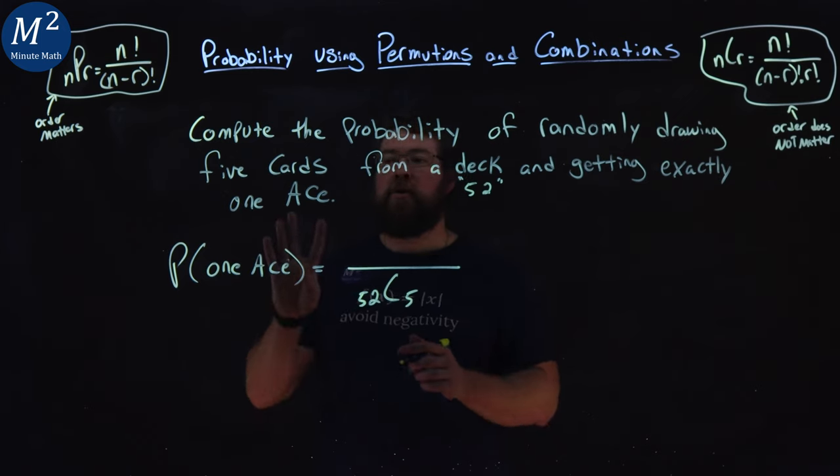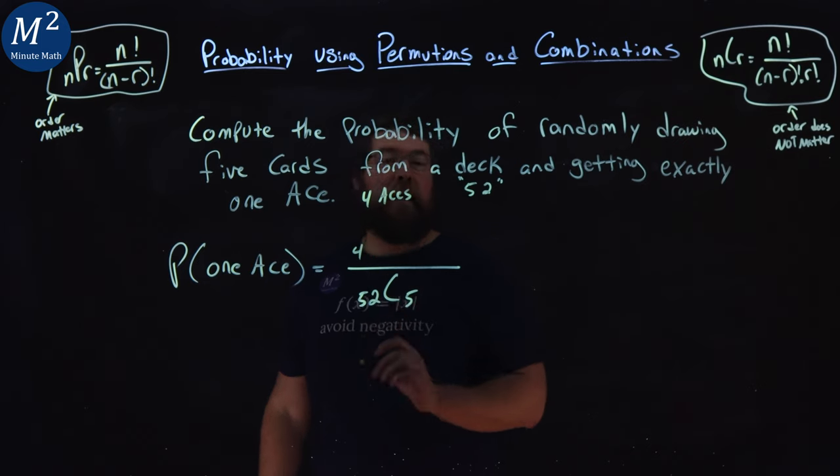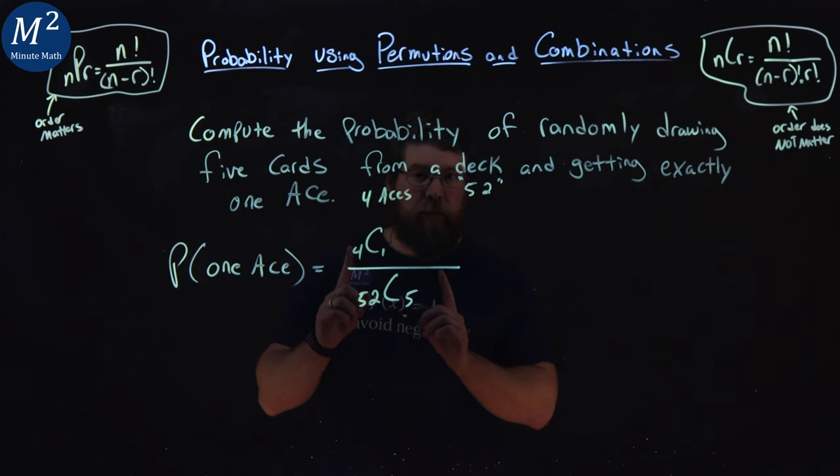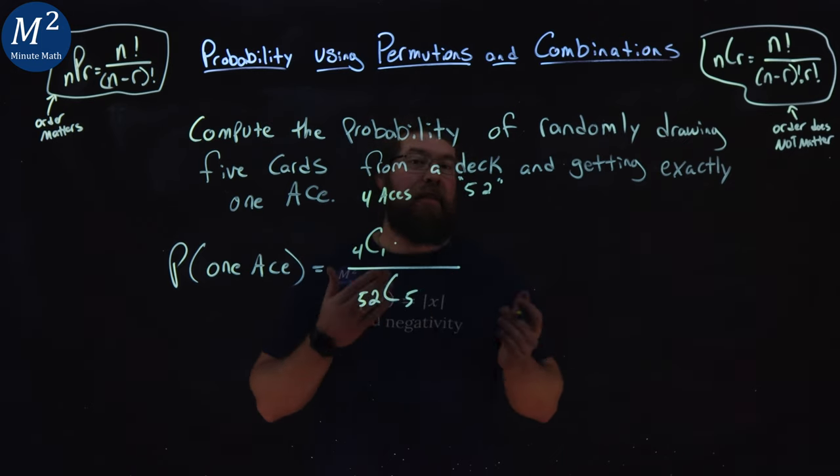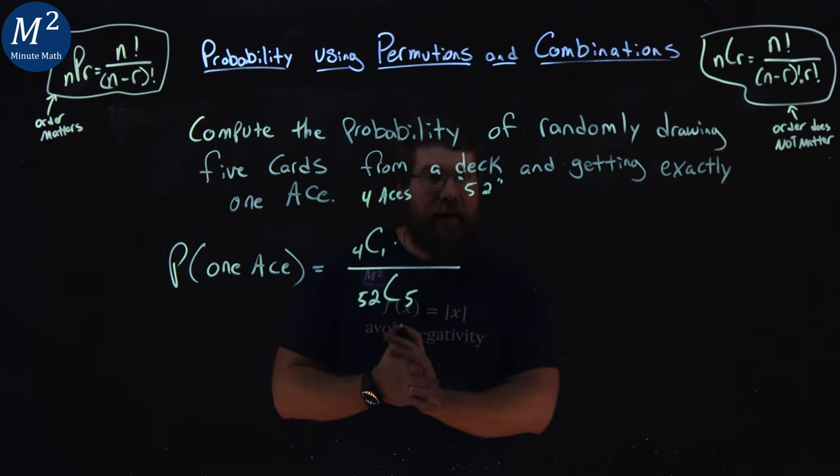From there, there are a total of four aces in the deck. So there's four aces. We're choosing one of them. So we have four aces, we can only choose one, and the rest of the options that we're choosing cannot be aces.